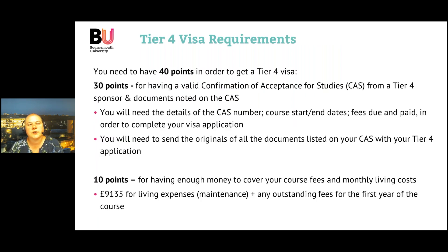To make a valid Tier 4 visa application, you have to earn 40 points. You earn 30 points for having a valid CAS from a Tier 4 sponsor — BU is a Tier 4 sponsor — and you must also have the documents written on your CAS. You will need your CAS number, the course start and end dates, what your course fees are, how much you have paid, and all of that information from your CAS statement to make your visa application.